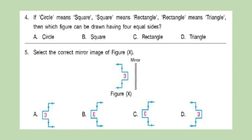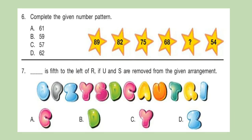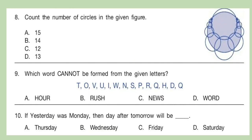Question 6: Complete the given number pattern. Think about your answer. Question 7: Dash is fifth to the left of R if U and S are removed from the given arrangement. Question 8: Count the number of circles in the given figure. Question 9: Which word cannot be formed from the given letters?